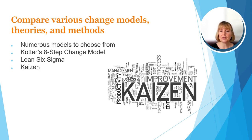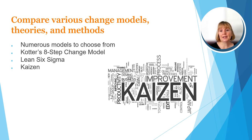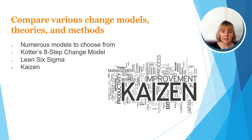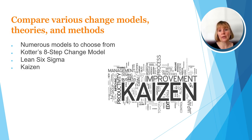For example, a small retail business who wants to expand and open another store may have different needs than a large company that has a production line and wants to make product development and their production line more efficient. There are numerous types of change models, theories, and methods. A few of these include Kotter's 8-step change model, Lean Six Sigma, Kaizen, and Lewin's change model. They all assist organizations to make change and show a clear path to engaging employees to help with that change.